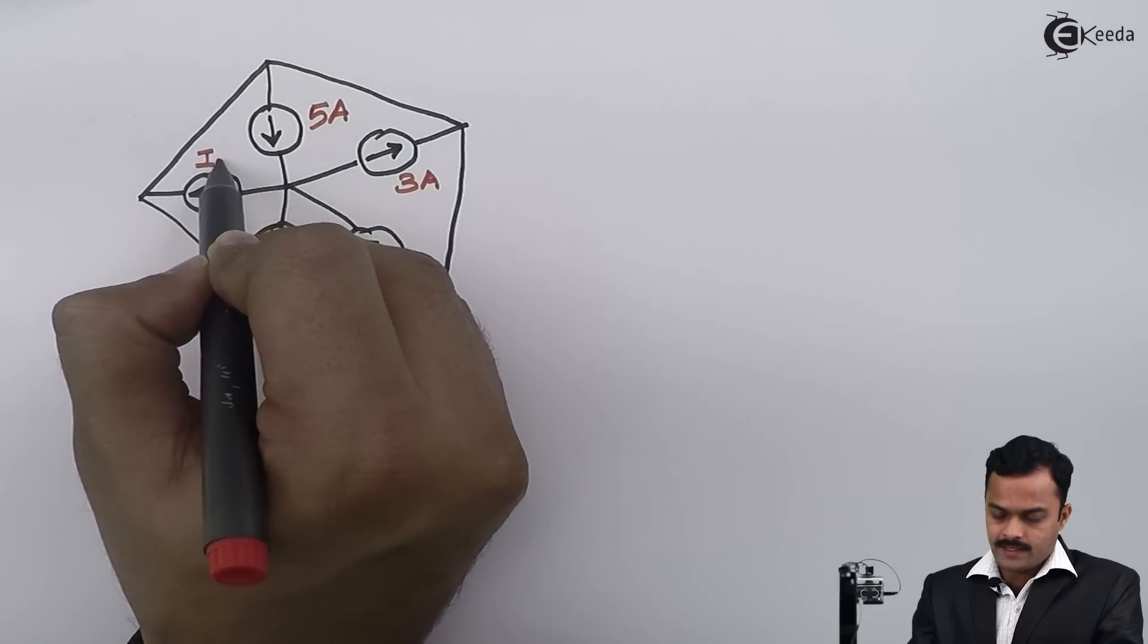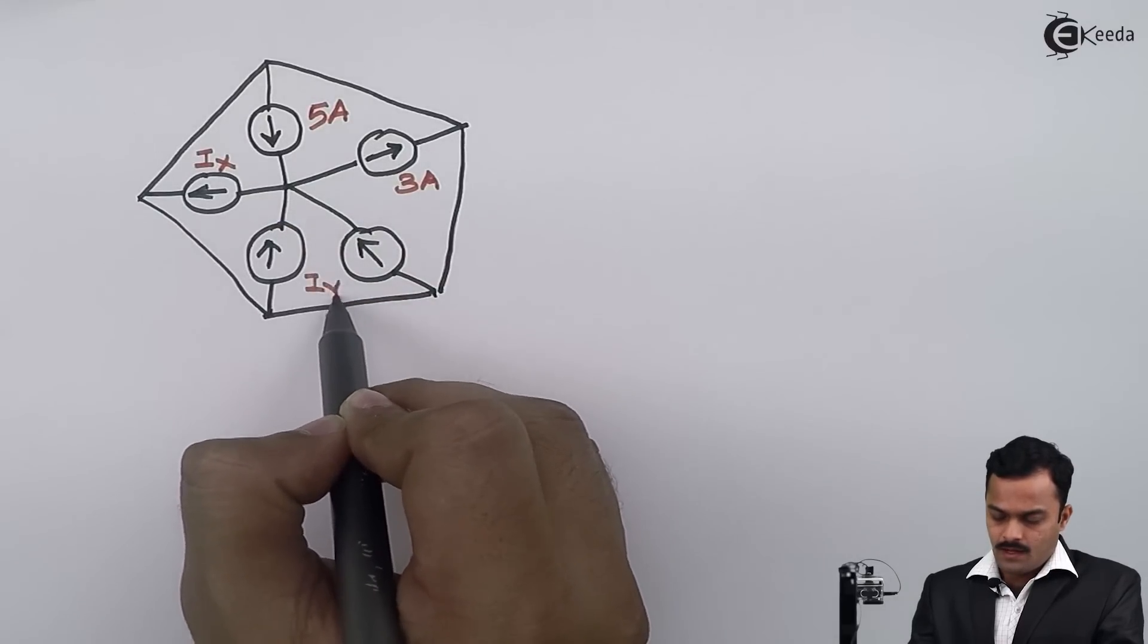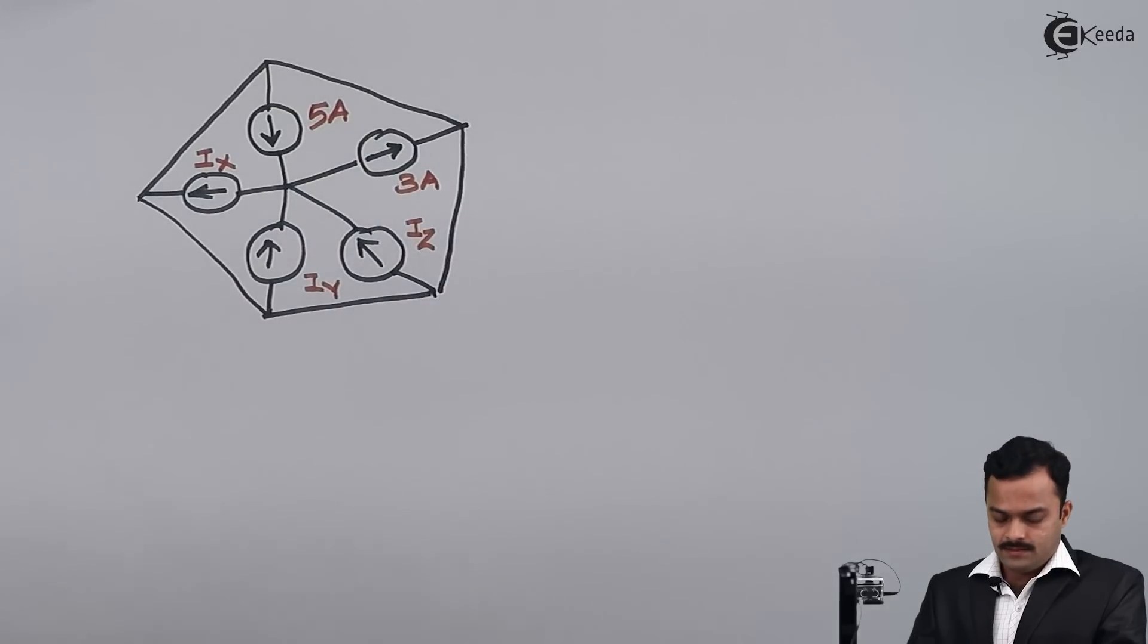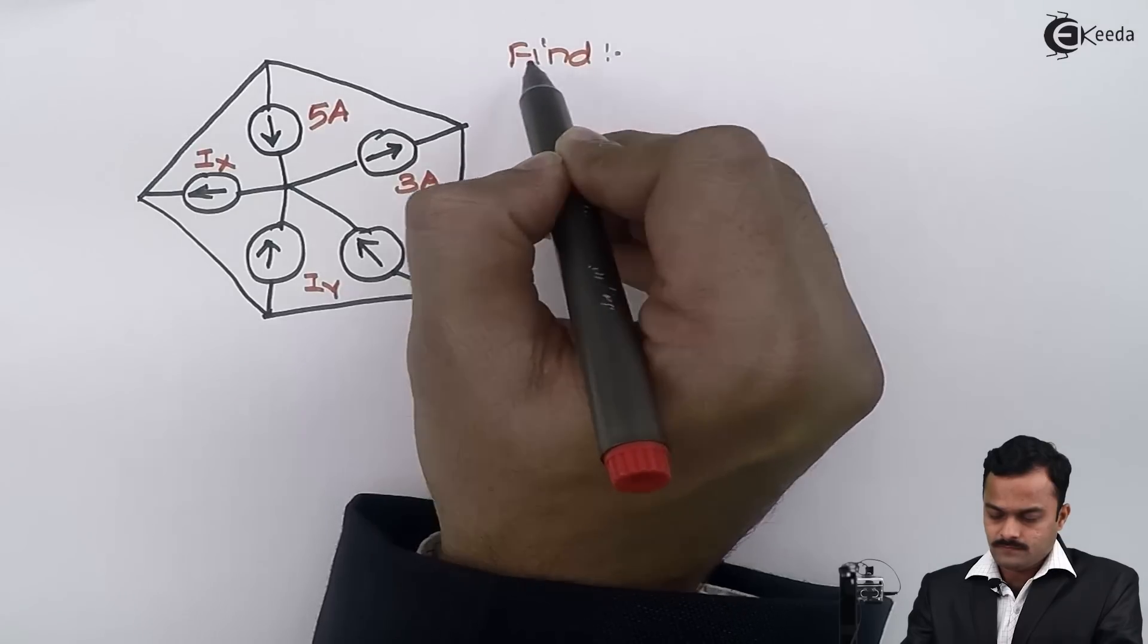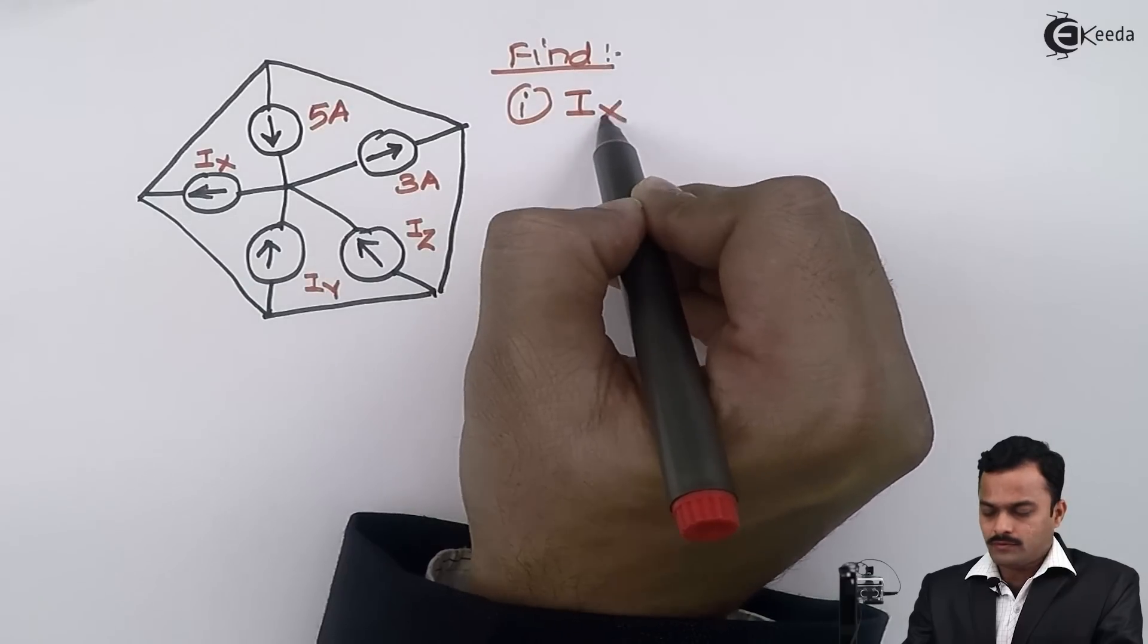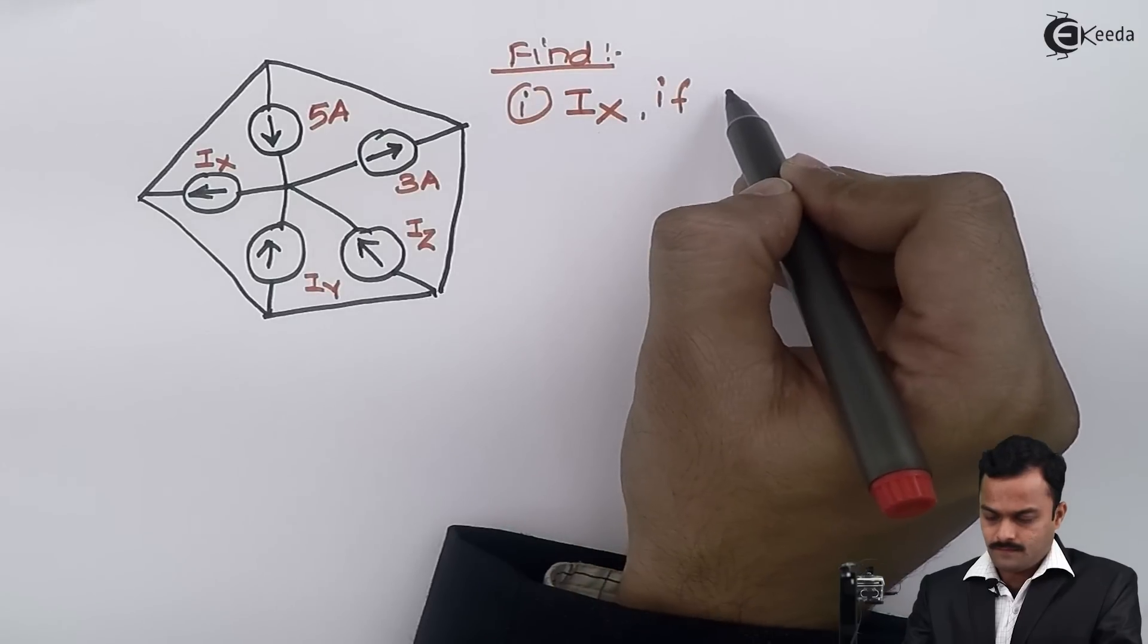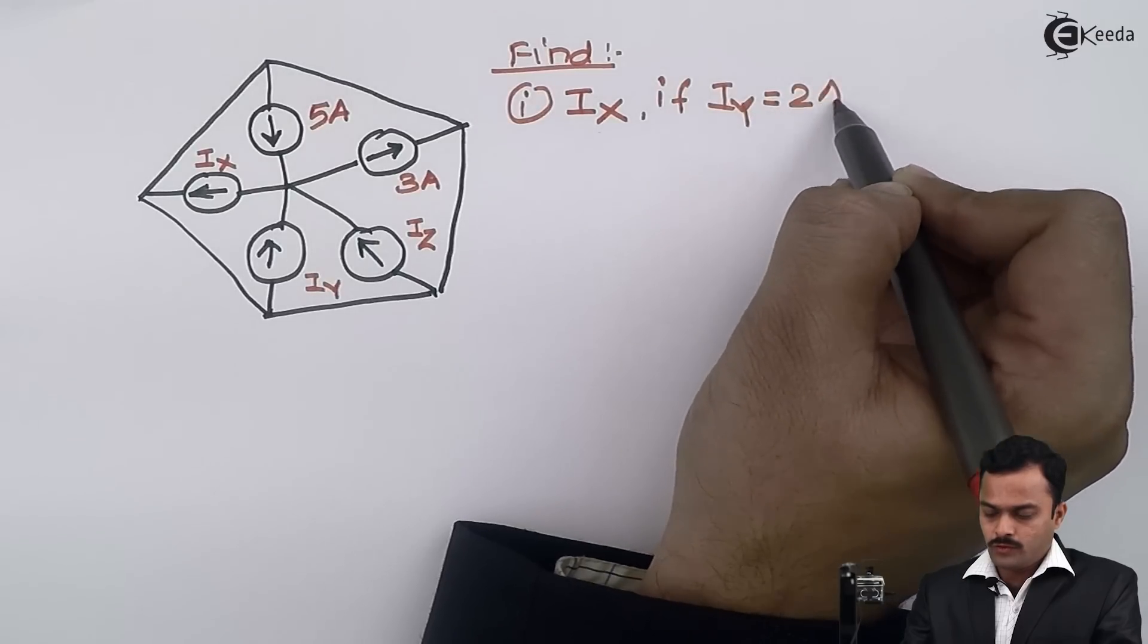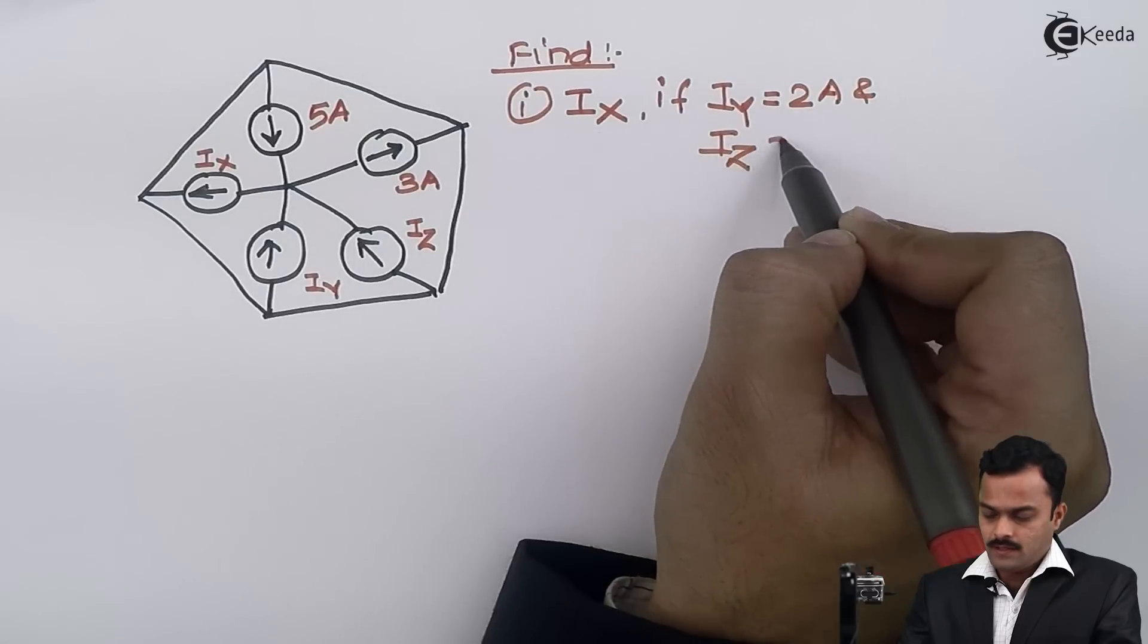Now we have to find out, first we have to find out the value of ix if iy equals 2 ampere and iz equals 0 ampere.